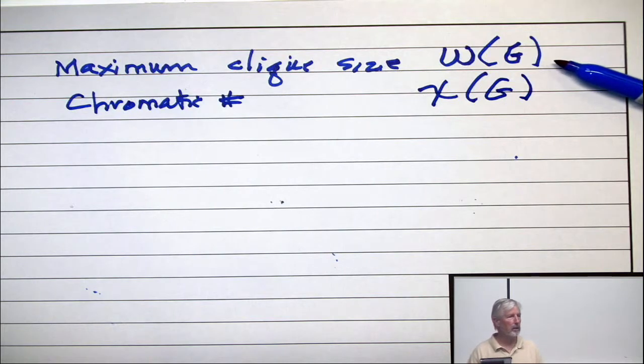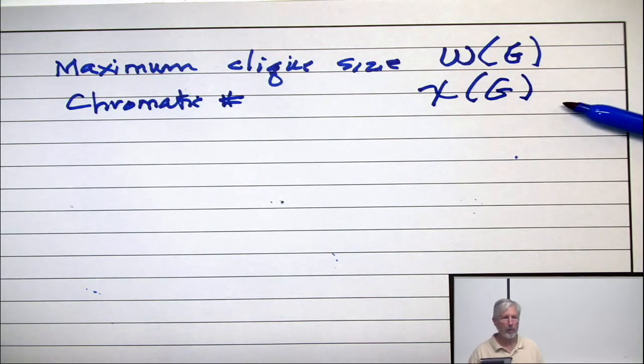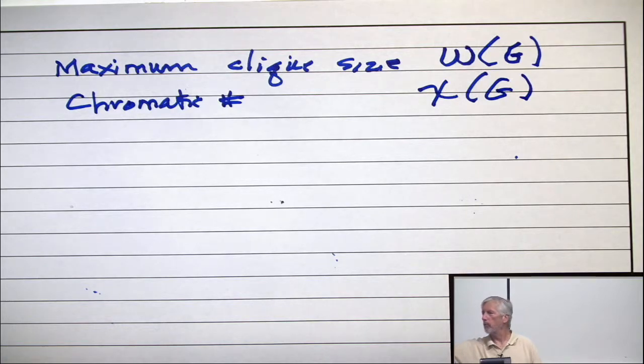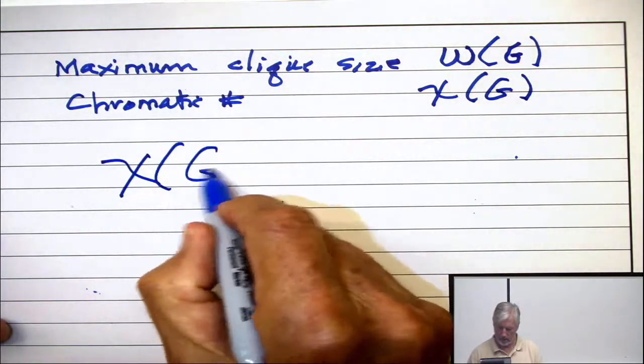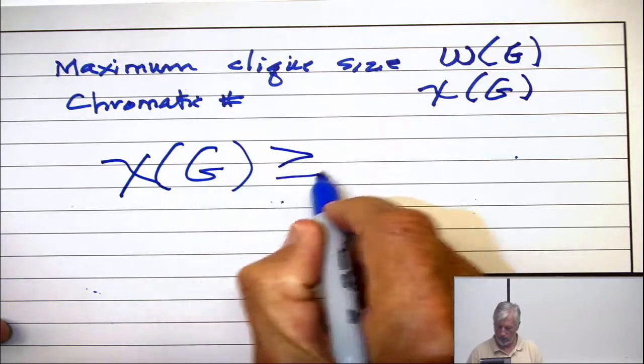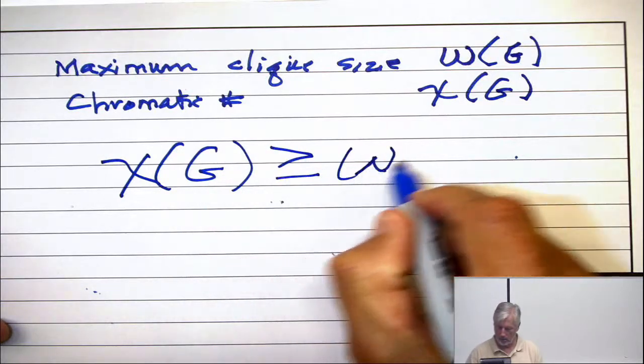Largest clique, fewest number of colors. And the theorem that you proved is that chi of G is greater than or equal to omega of G.